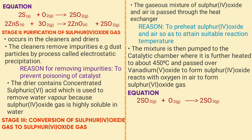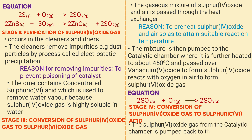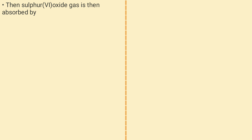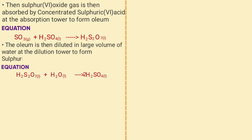Stage four is the conversion of sulfur trioxide (SO₃) to sulfuric acid. The SO₃ formed in the catalytic chamber is pumped back through the heat exchanger where it is cooled, then it is absorbed by concentrated sulfuric acid at the absorption tower to form oleum. The equation is: H₂SO₄ + SO₃ → oleum (H₂S₂O₇). The oleum is then diluted with water in the dilution tower to form sulfuric acid. The equation is: oleum + H₂O → 2H₂SO₄.